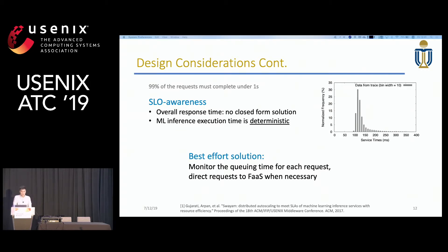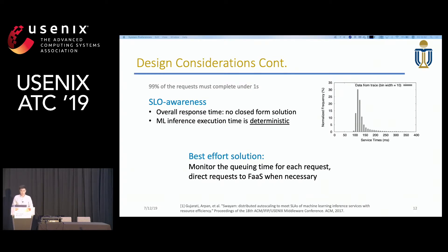As for SLO requirements, machine learning serving SLOs are usually specified as, for example, 99% of all requests must finish under one second. In public cloud there is no closed-form solution for response time distribution. However, observations from large industrial clusters show that machine learning serving has the convenient property of being deterministic in execution time, because it has fixed-size input features and applies the same model with the same compute pattern to all inputs. So we can assume fixed execution time and only focus on queuing delay for each request, allowing us to timely route requests to maintain SLO compliance.